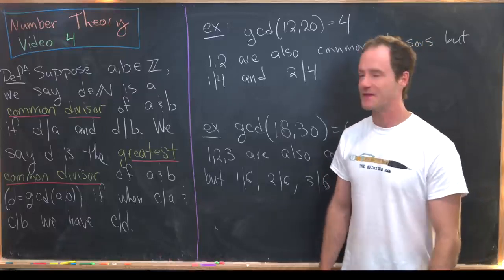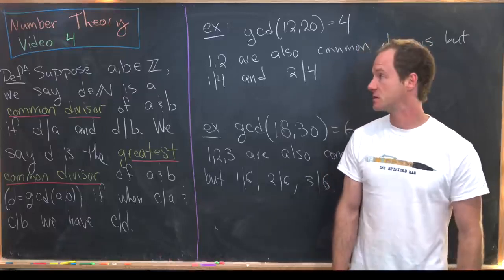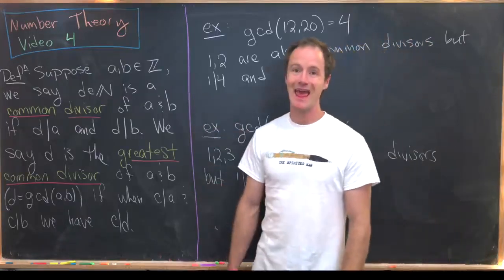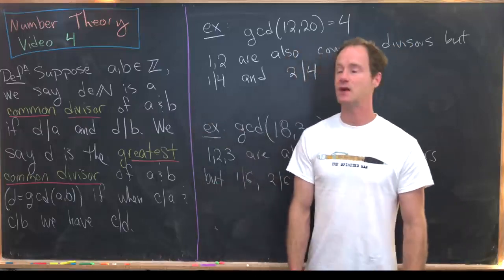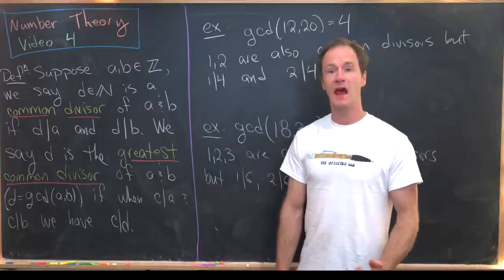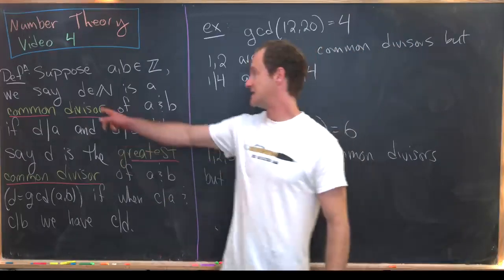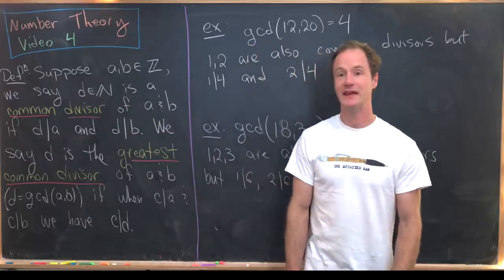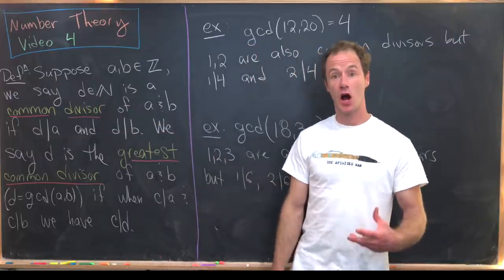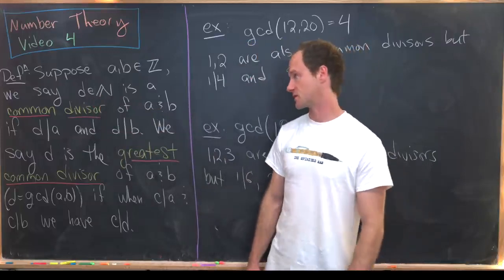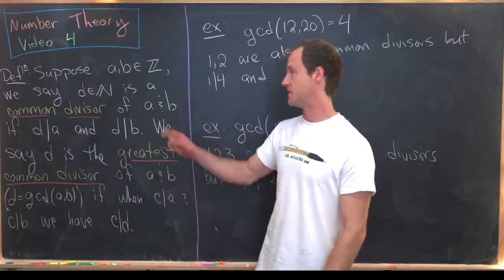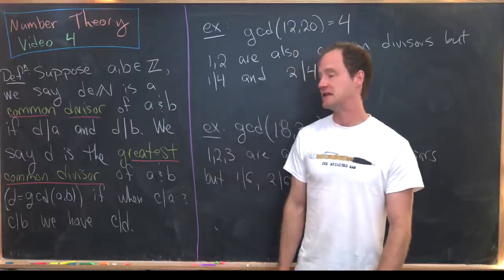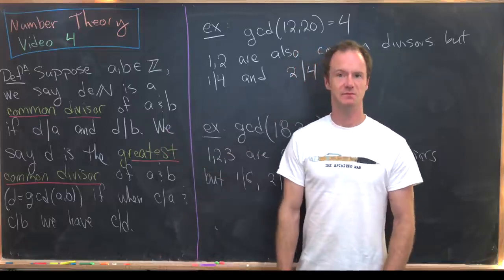So let's look at the definition. We want to suppose that A and B are integers, and we say that D, which is a natural number, is a common divisor of A and B if D divides A and D divides B.